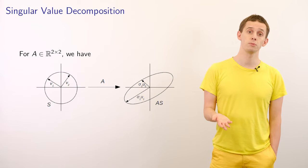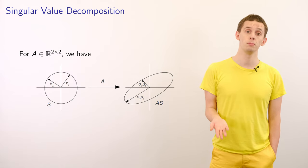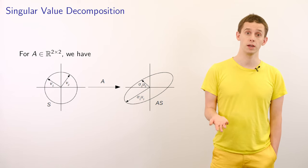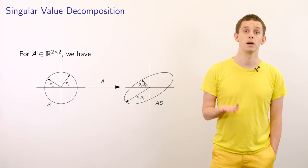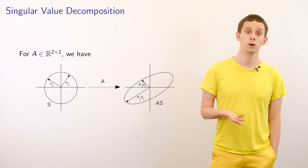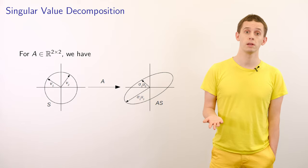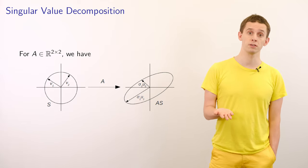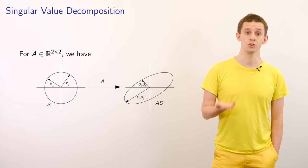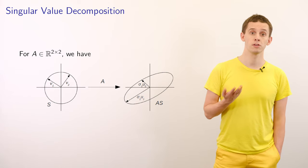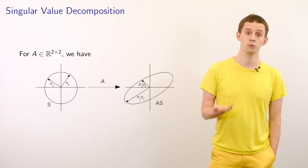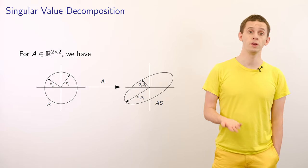Let's illustrate this by looking at a 2x2 matrix A. If we have the unit circle S and we apply our matrix A to it, then we'll get an ellipse. That will be defined in terms of principal semi-axes, which have sigma_1 times u_1 and sigma_2 times u_2, where u_1 and u_2 are orthogonal.